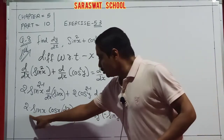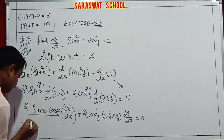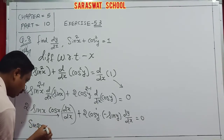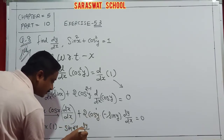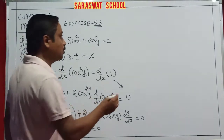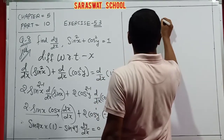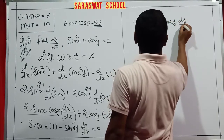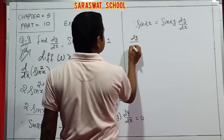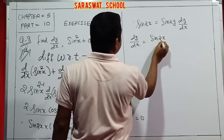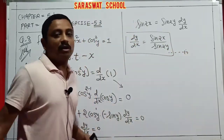Now, dy/dx is the same formula. Which formula? This is the sin 2x identity. So 2 sin x · cos x = sin 2x, and similarly the cos y side gives -sin 2y · dy/dx = 0. So finally I get sin 2x = sin 2y · dy/dx. Easy as it is — dy/dx = sin 2x / sin 2y. That is your answer, equation number 1.